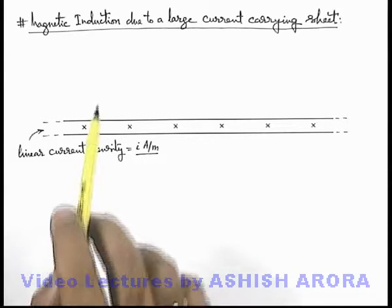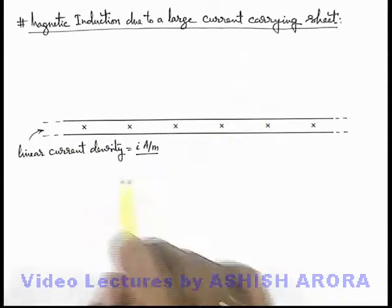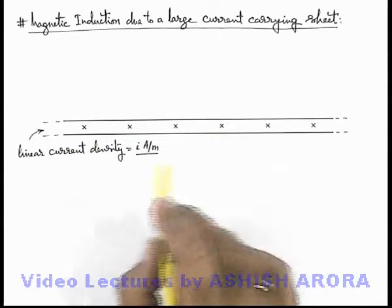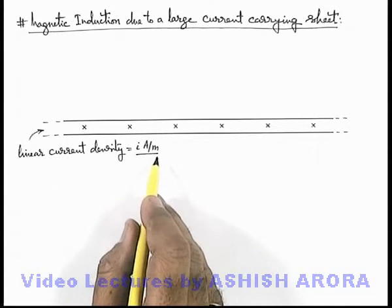Now let us calculate the magnetic induction due to a large current carrying sheet. This figure shows the cross section of a thin large current carrying sheet which is carrying a linear current density i ampere per meter.